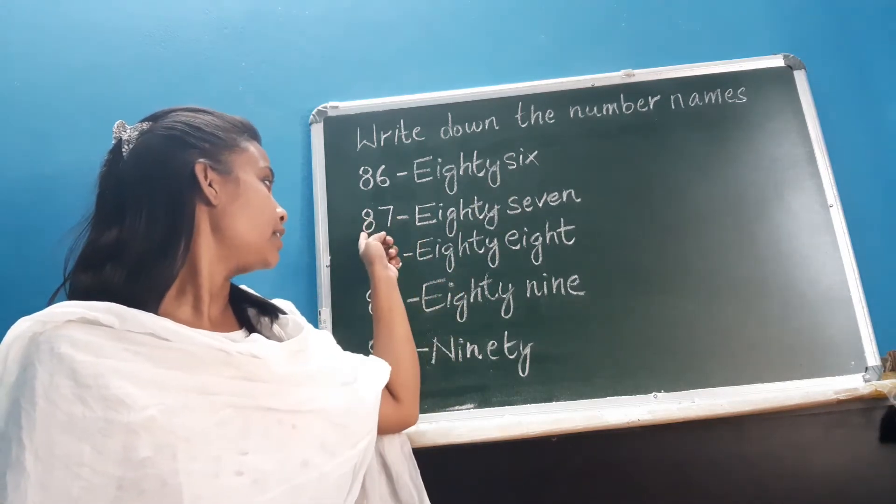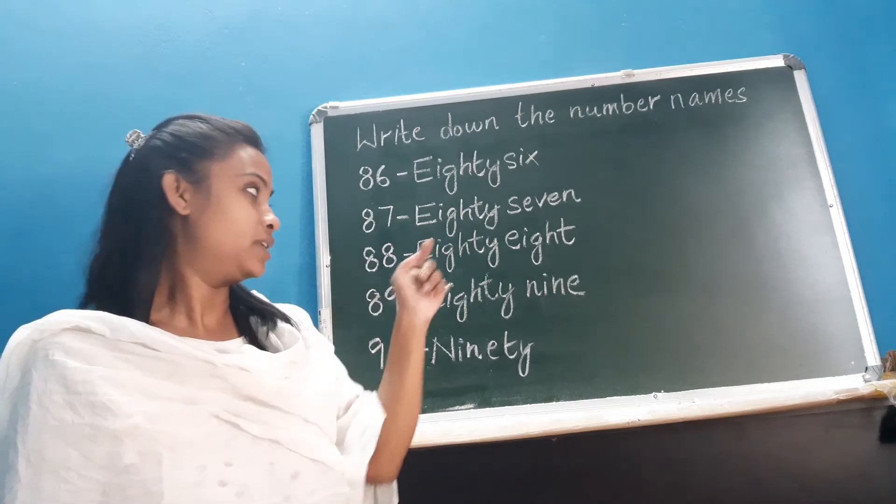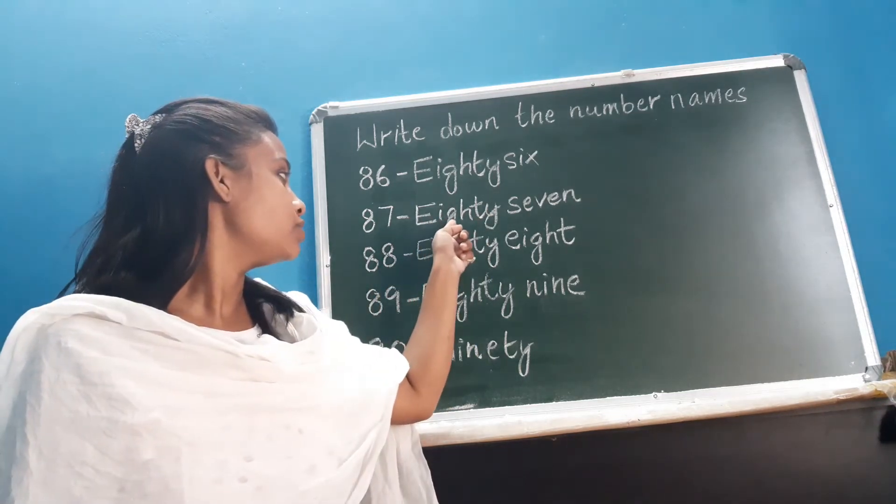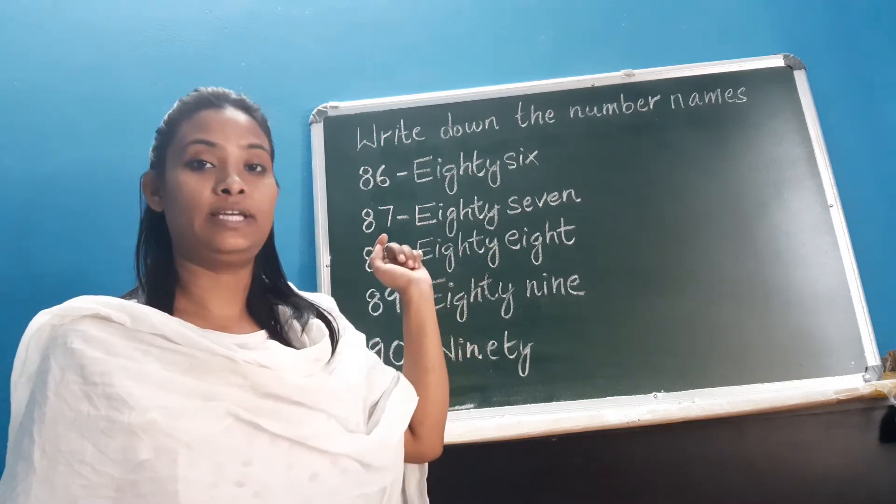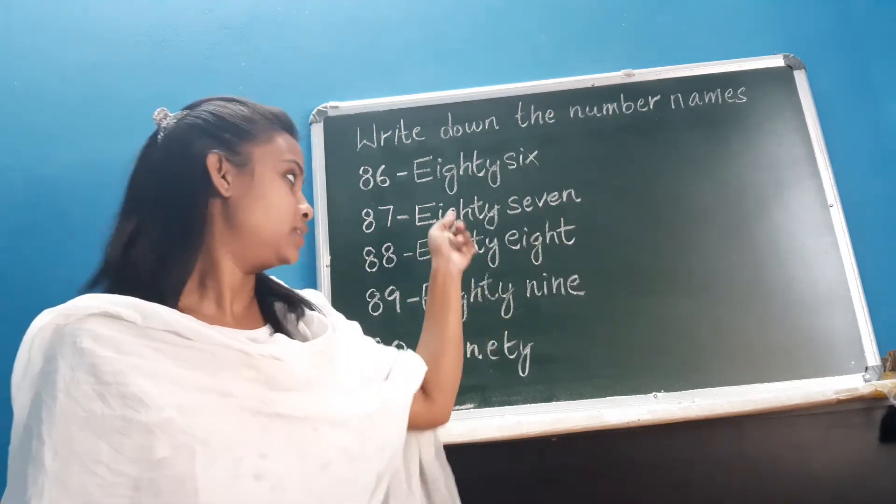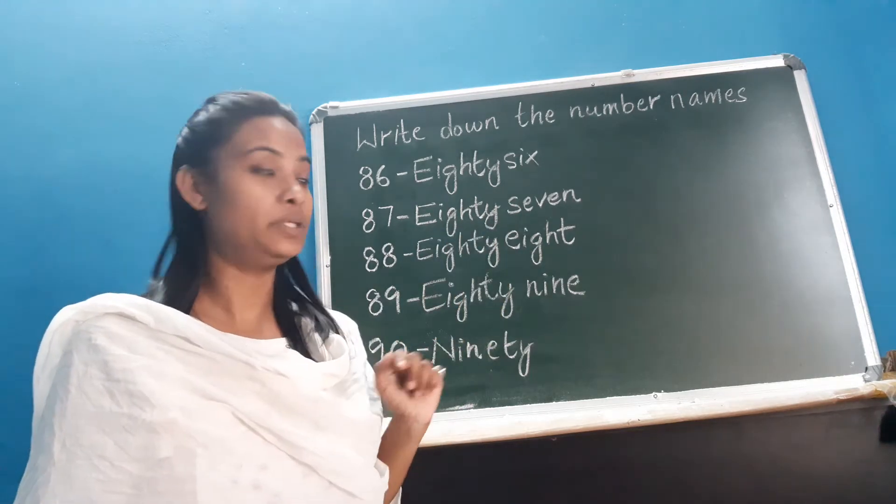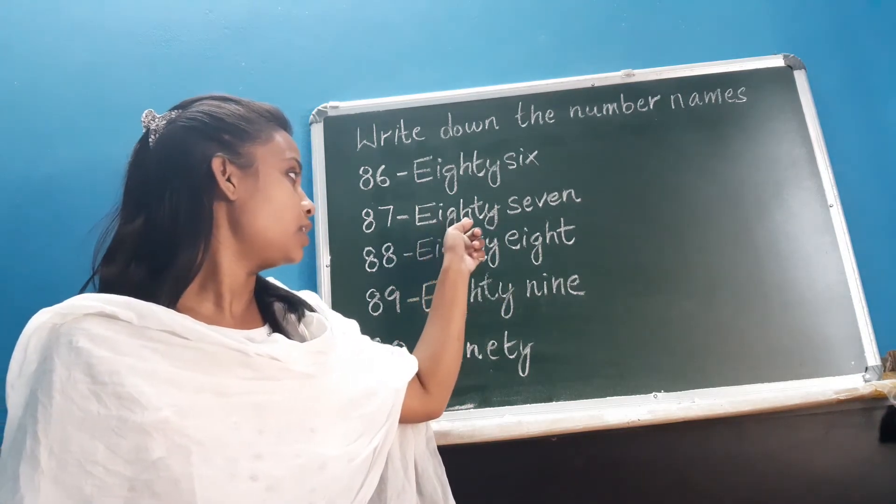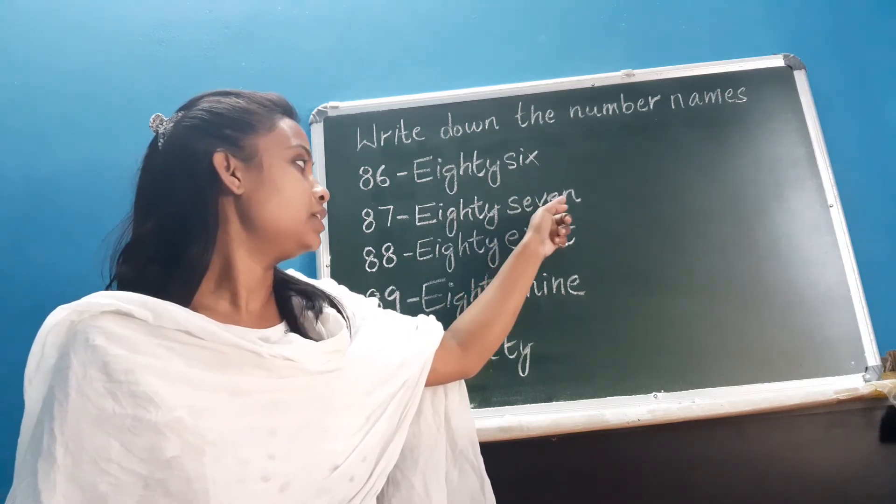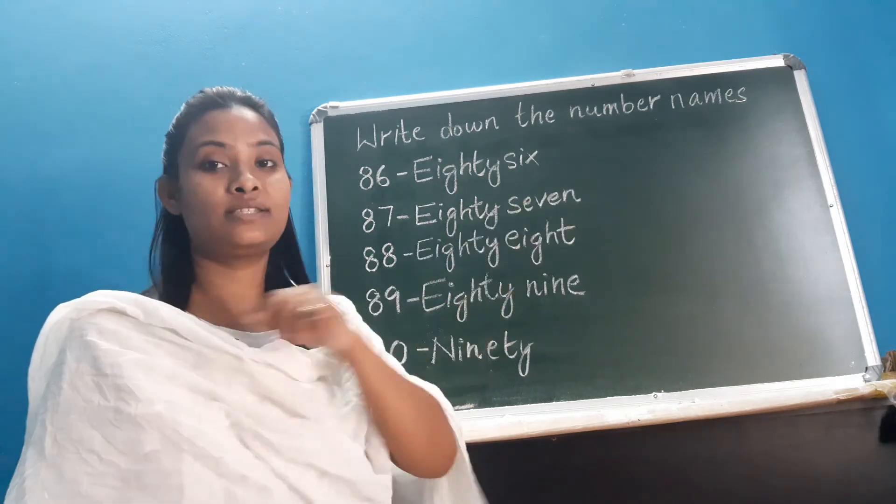Now next, 87, and this is the spelling of 87. E, I, G, H, T, Y, eighty, S, E, V, E, N, seven, 87. I repeat, E, I, G, H, T, Y, eighty, S, E, V, E, N, seven, 87. Okay.